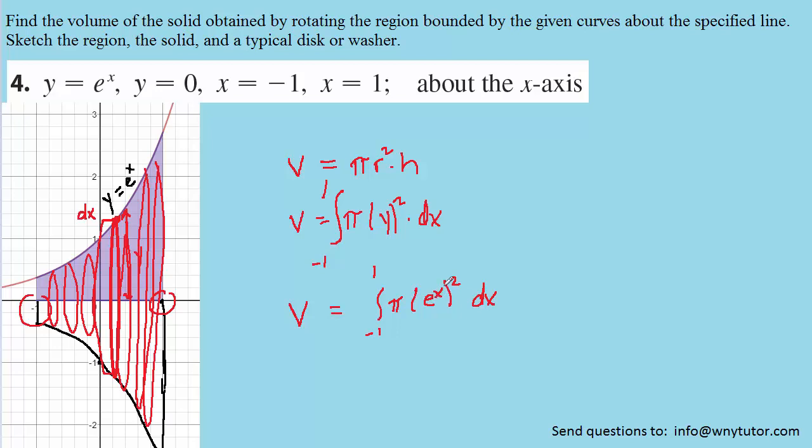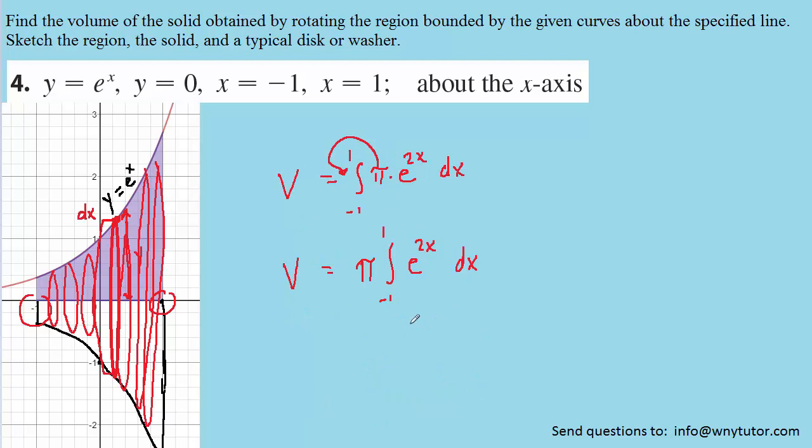Now, let's go ahead and square e to the x. When we square, we're going to multiply those exponents right there. And of course, that would give us e to the 2x. And since pi is a constant, it can be removed to the outside of the integral. And we are now set to integrate e to the 2x.